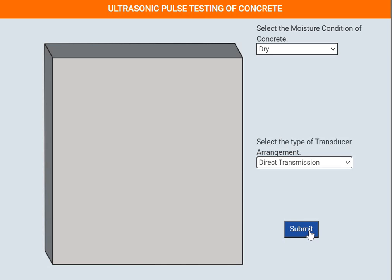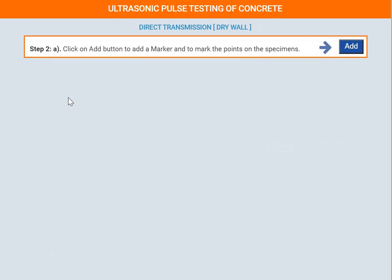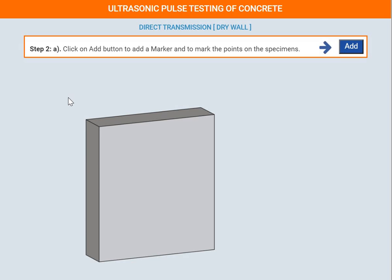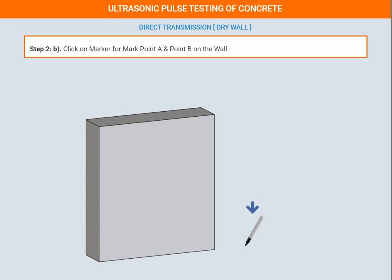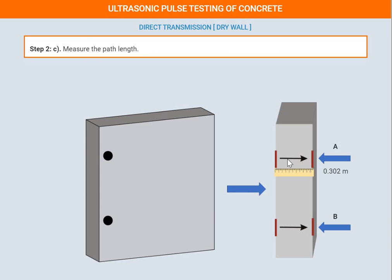Click submit and then we mark the points where we are going to test. Click add and the marker will appear. Mark points A and B on the specimen. We take a trial on point A and point B and measure the width of the specimen from this point to this point, since we will place the transducers at both A and B. Note down the widths: 0.302 m and 0.295 m.